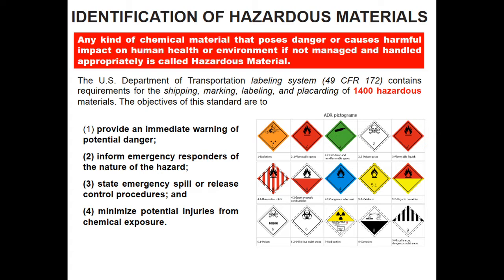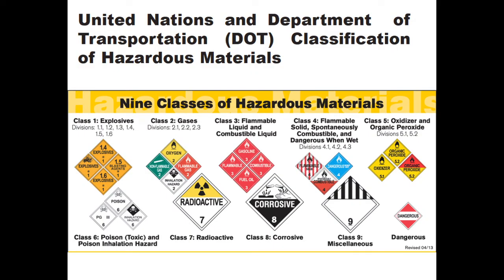As we move to other slides, we find which signs symbolize which kind of hazard. DOT has classified hazardous materials into nine groups. The first is explosives, with different types of signs. The second is gases — it can be flammable gas, non-flammable gas, or oxygen, which is a different type. Another is inhalation hazard, which is not flammable but if inhaled into your lungs may cause suffocation or other health injuries. Class three is flammable or combustible liquid.